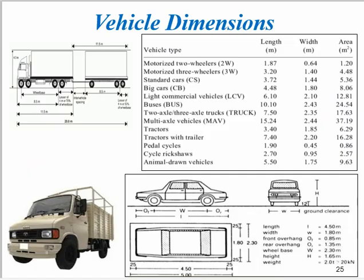Regarding vehicular dimensions, from the figure the motorized two-wheeled vehicle type shows its length, width, and area while it moves on the road. For the motorized two-wheeler, the length is 1.87 meters, width 0.64 meters, and the area occupied on the road is 1.2 square meters.